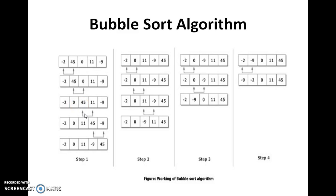In the next step, 45 is compared with 11. Again, 11 is the smallest number, so an interchange is required — 11 will take the position of 45, and 45 moves to 11's position. Similarly, in the next step, 45 is compared with minus 9 and again minus 9 is smaller than 45, so interchange is required. Since there are 5 numbers, there are 4 comparisons. In general, for 5 numbers, we require 4 comparisons and 4 different iterations.